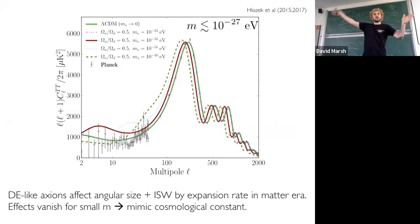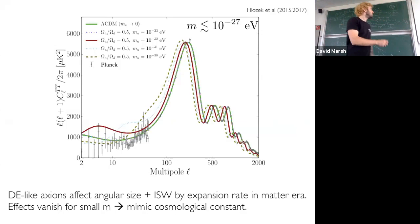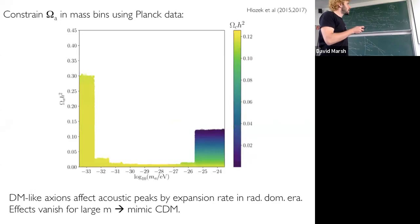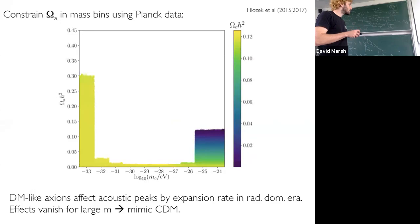There are two limits in which you approach Lambda CDM: one where the mass goes to infinity, and one where the mass goes to zero. Clearly you then constrain some range of masses in between, because the universe looks like Lambda CDM. This is what we now do precisely using Markov chain Monte Carlo parameter estimation. Here is a plot from our 2017 paper constraining the density — omega, the cosmic density parameter in axions — as a function of axion mass for different mass bins. Look at the right-hand side: masses of 10^{-27} and above — these look like dark matter, constrained to be a small fraction.